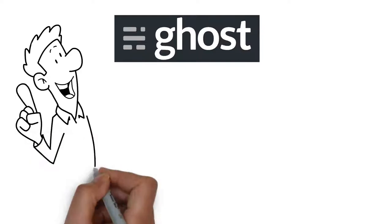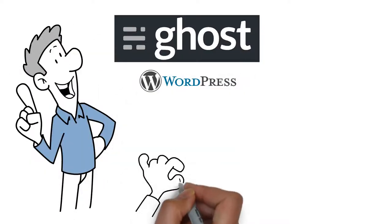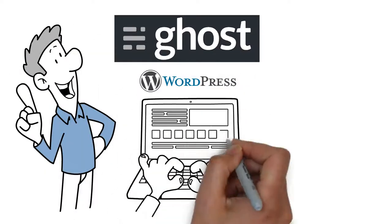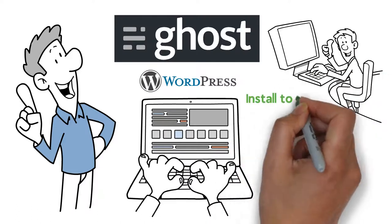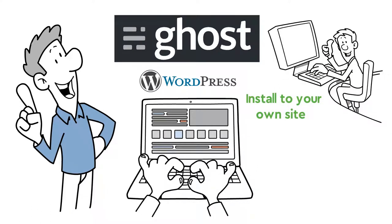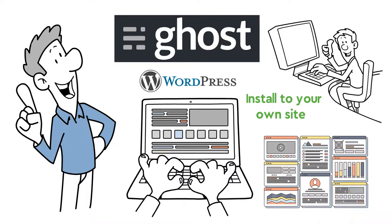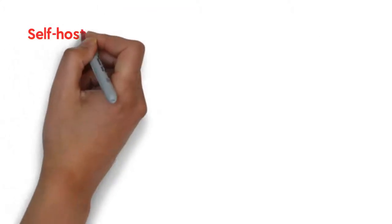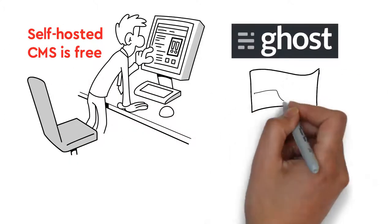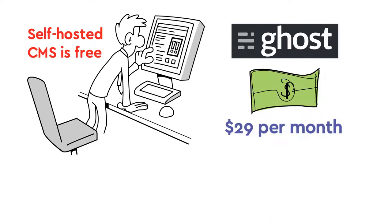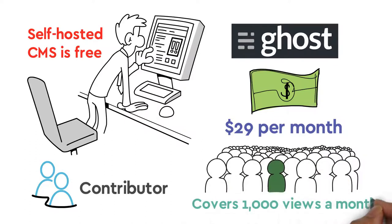Ghost. Much like WordPress, Ghost offers blogging on its own site or a downloadable version you can install to your own site. Both have an incredible amount of plugins, themes, custom domains, and widgets. But that's where the similarities end. The self-hosted CMS is free, but hosting on Ghost's network currently costs $29 per month for the basic subscription, which allows you to add one other contributor to your roster and covers 1,000 views a month.